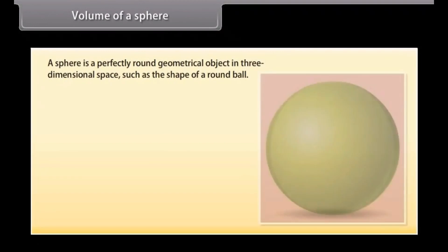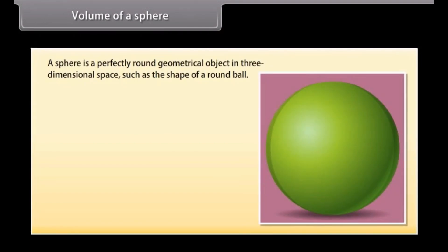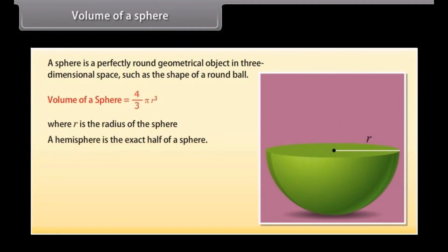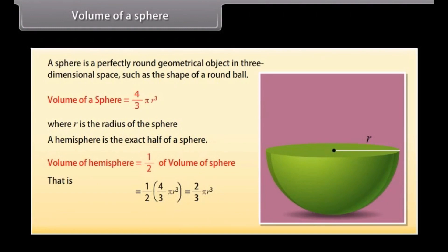A sphere is a perfectly round geometrical object in three-dimensional space, such as the shape of a round ball. The volume of a sphere is given by (4/3) × π × R³, where R is the radius. A hemisphere is exactly half of a sphere, and its volume is half that of a sphere, equal to (2/3) × π × R³.